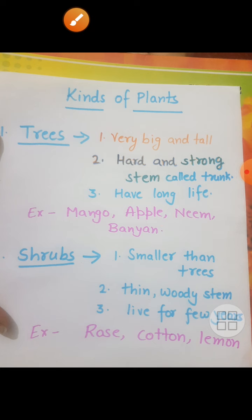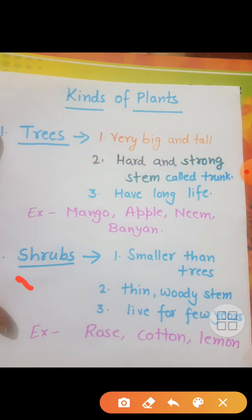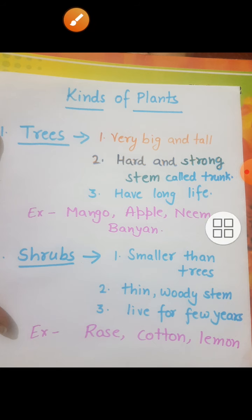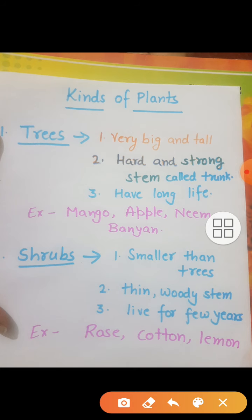Next is shrubs. Shrubs kya hota hai? Smaller than trees — ye trees se chhote hote hai. They have a thin woody stem — baut patli si. They live for few years — kuchh salo tak rahate hai, jyada inki life nahi hoti. For example: rose, cotton, and lemon. These are shrubs.